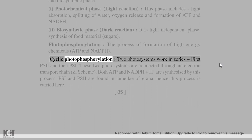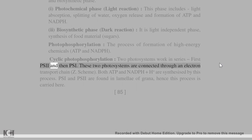Cyclic photophosphorylation: Two photosystems work in series, first PSI and then PSI. These two photosystems are connected through an electron transport chain (Z scheme). Both ATP and NADPH are synthesized by this process. PSI and PSII are found in lamellae of grana, hence this process is carried here.